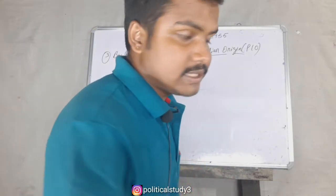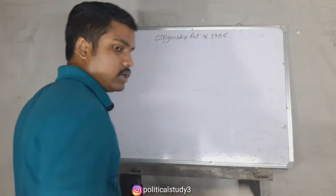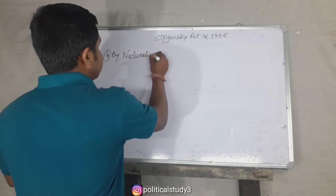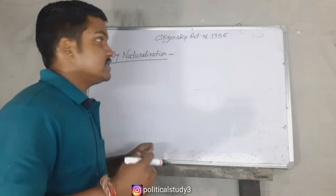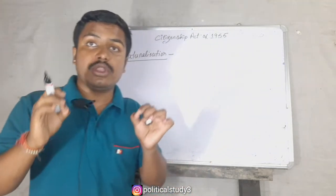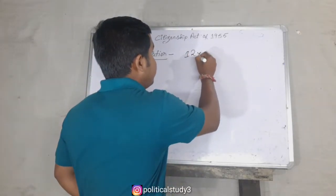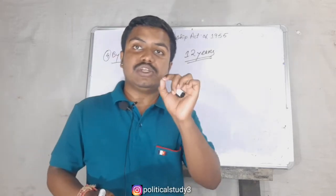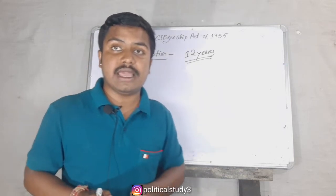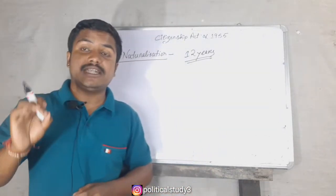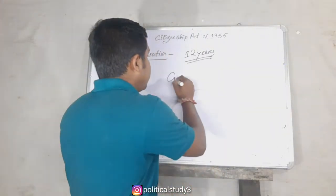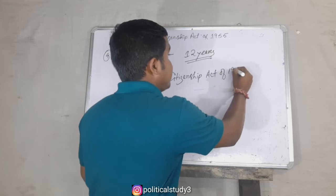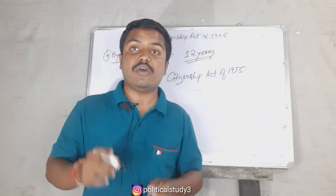Our fourth point is by naturalization. A person can acquire citizenship by naturalization if he or she is ordinarily resident in India for 12 years and fulfills the qualifications mentioned in the Third Schedule of the Citizenship Act. Then he or she is able to acquire the citizenship of India.